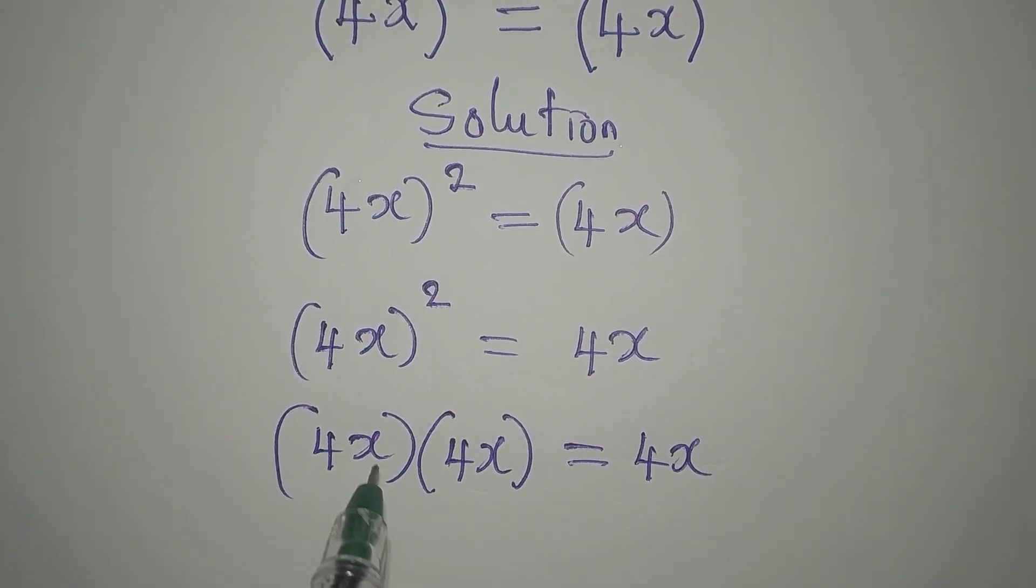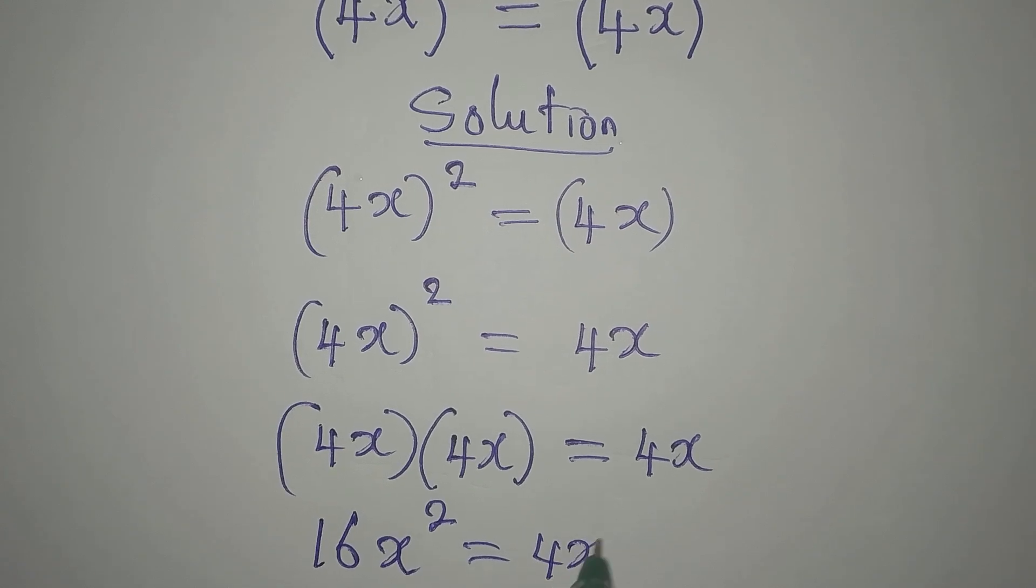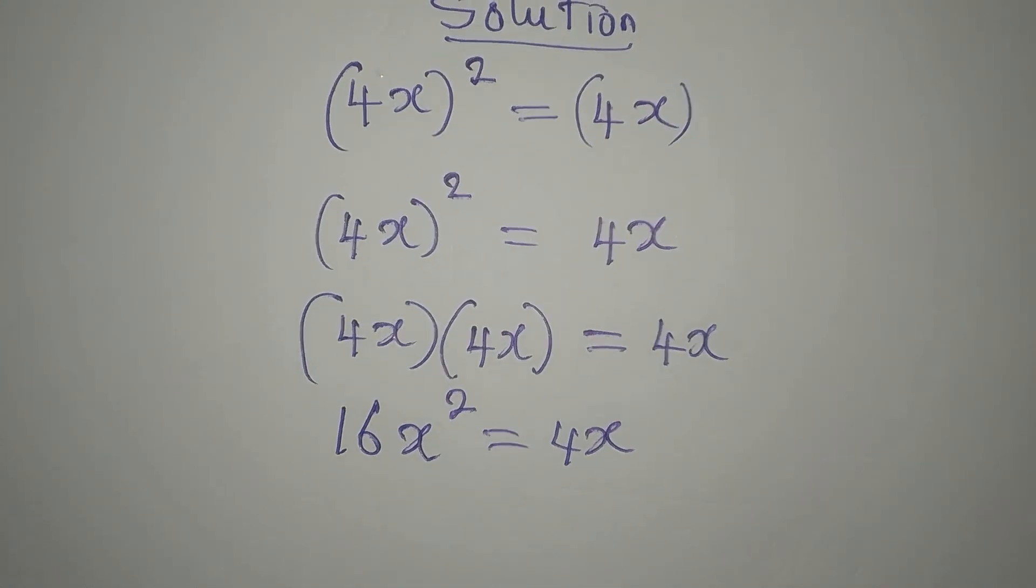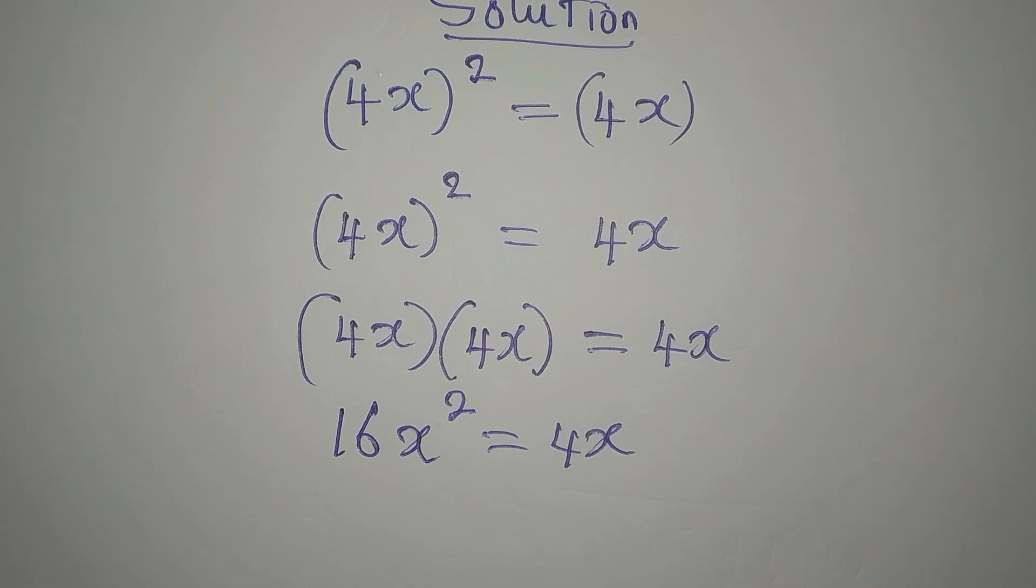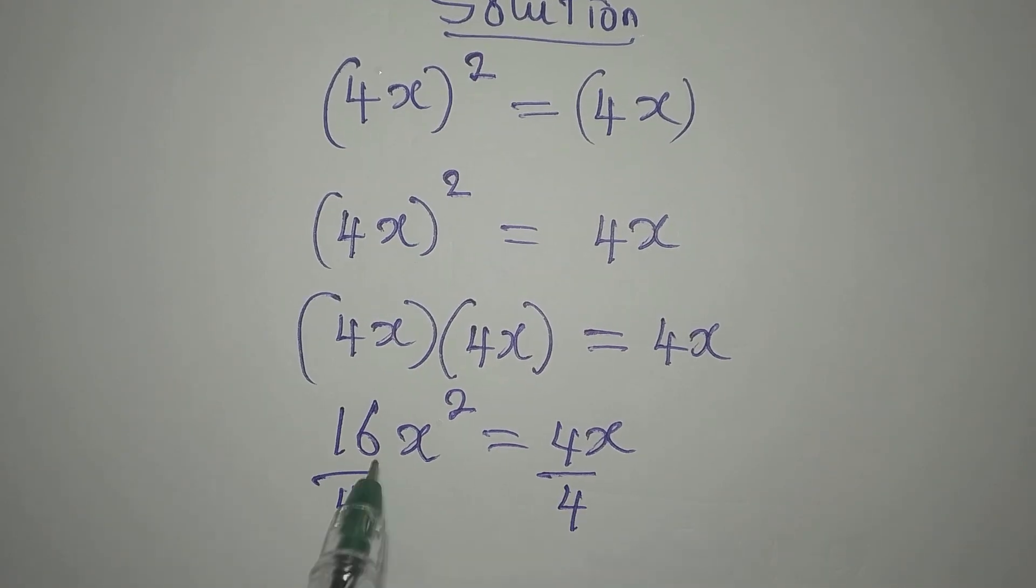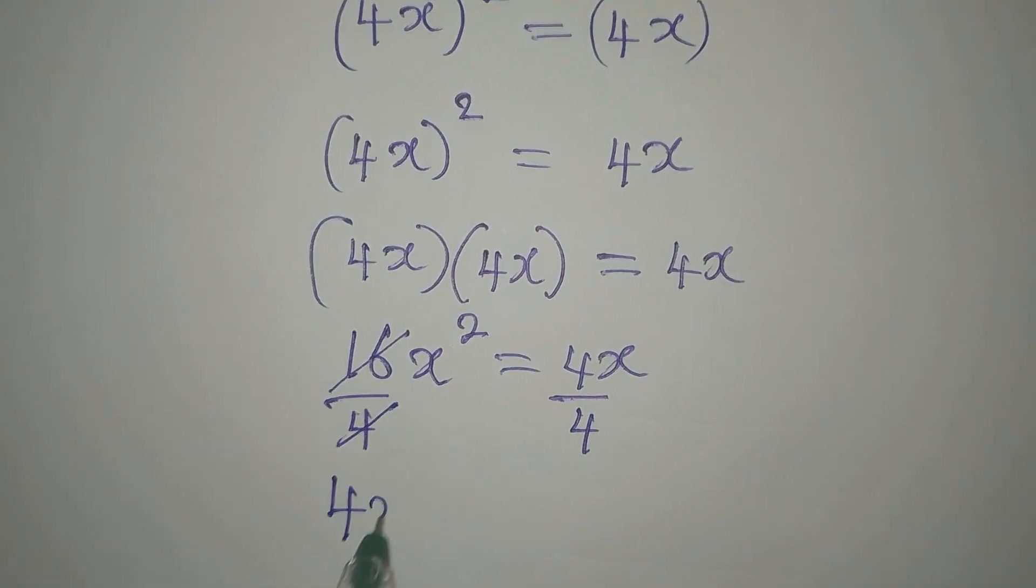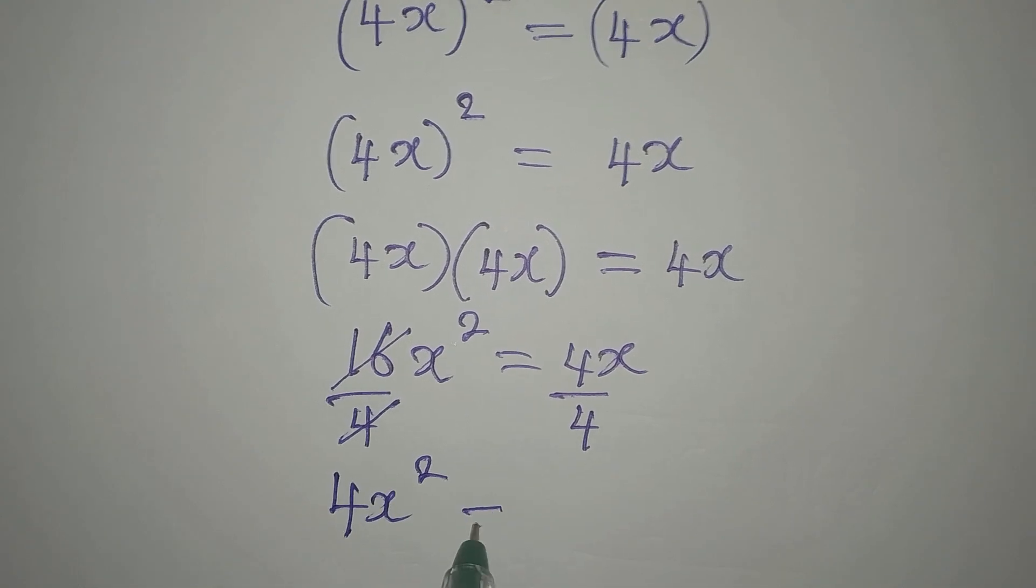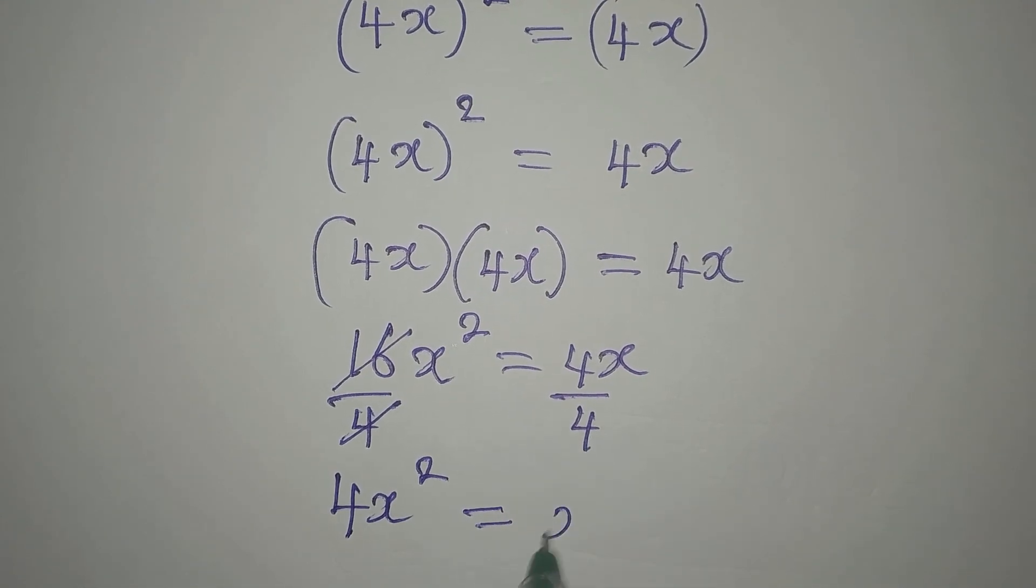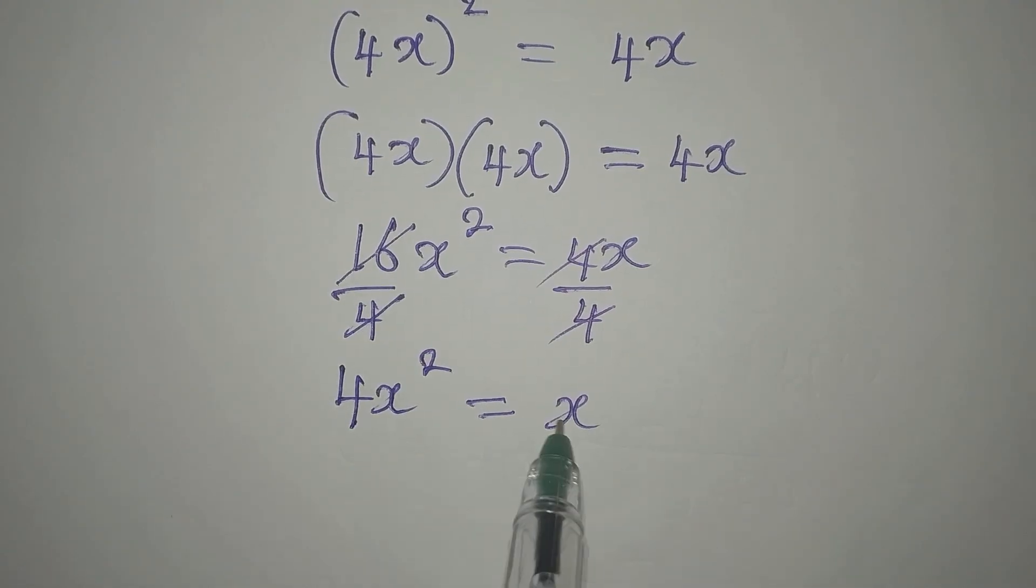So let's multiply this out and we'll get 16x² = 4x. Now that we don't have any brackets, we can divide by 4. Dividing both sides by 4 gives us 4x² = x.